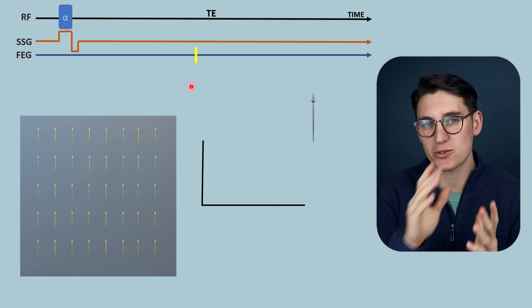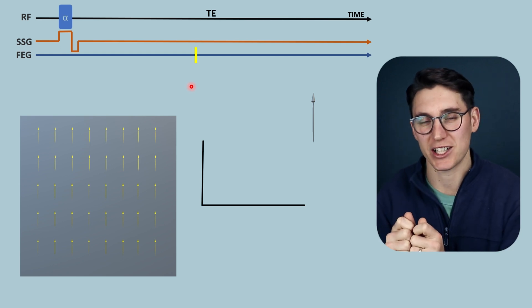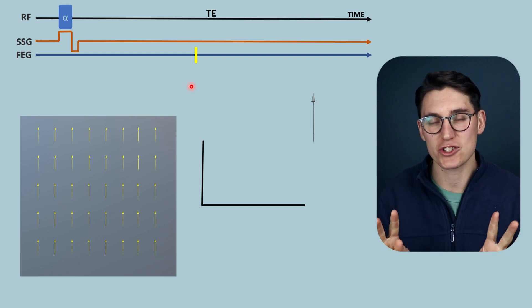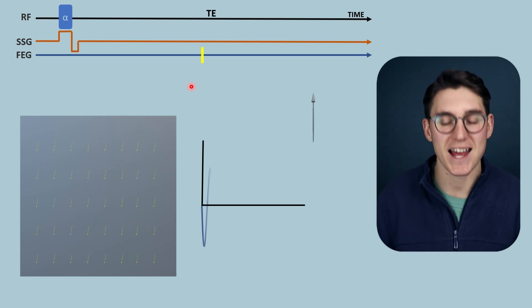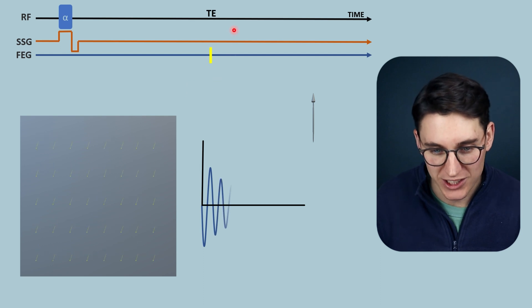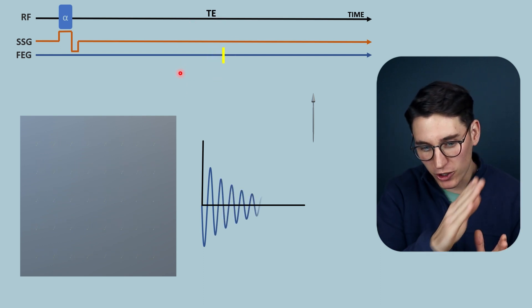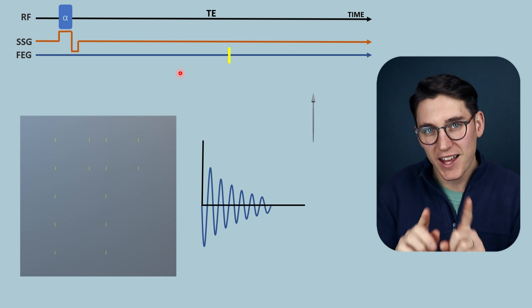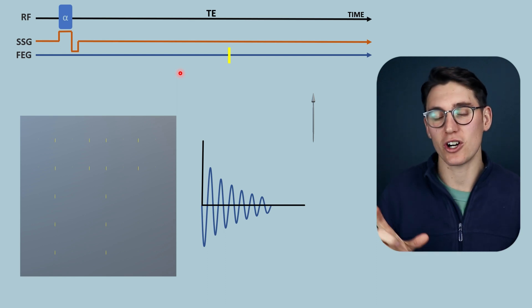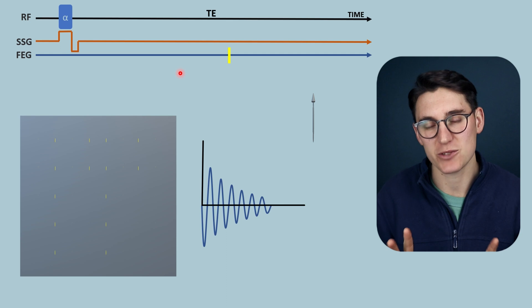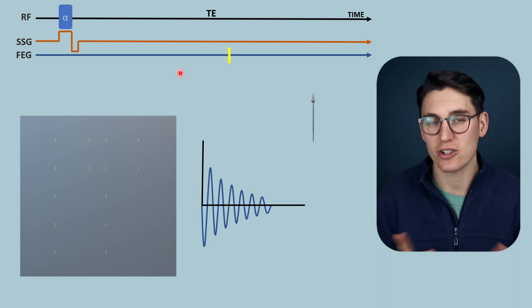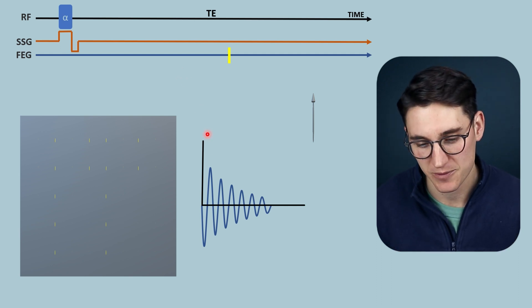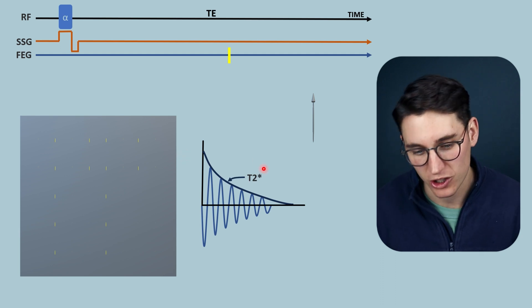There are two mechanisms for that loss of transverse signal: spin-spin interaction, as well as loss of phase due to local magnetic field inhomogeneities. Our spins are going to precess at the Larmor frequency, experiencing no gradient except the main magnetic field, but we are losing signal. The vectors still have transverse magnetization, but they have dephased from one another through both T2 relaxation and T2 star decay because of those local magnetic field inhomogeneities.